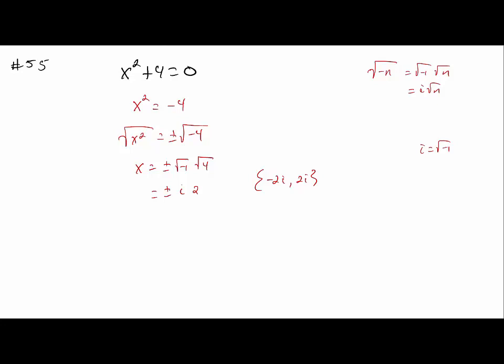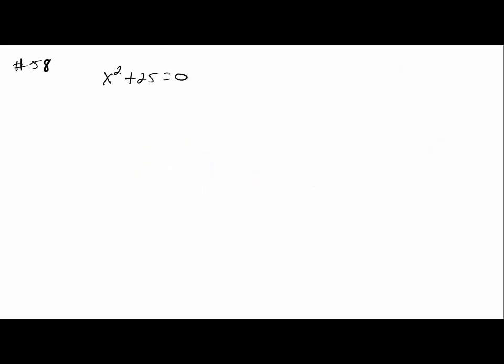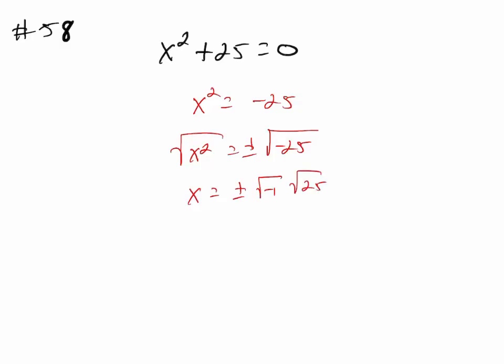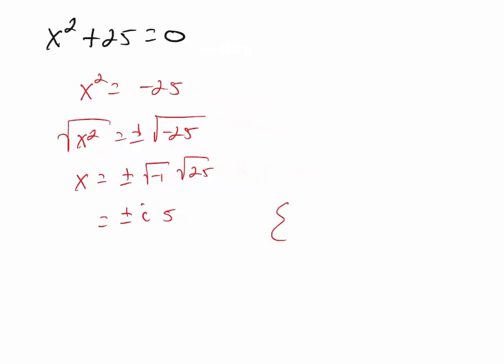For number 58, it's the same approach. I'm going to subtract 25 from both sides and take the square root of both sides. This gives plus or minus the square root of negative 1 times the square root of 25. Since i equals the square root of negative 1 and the square root of 25 is 5, my two solutions are negative 5i and 5i.